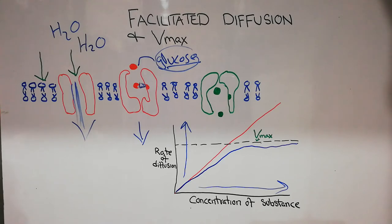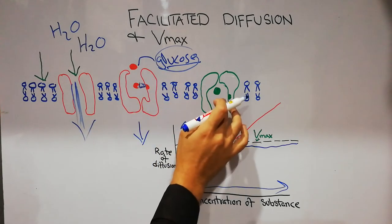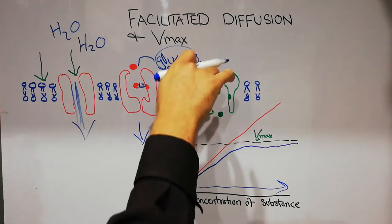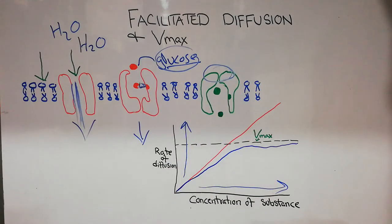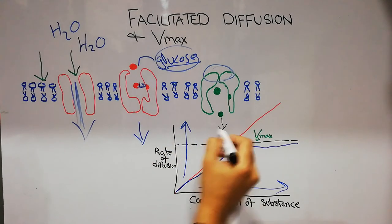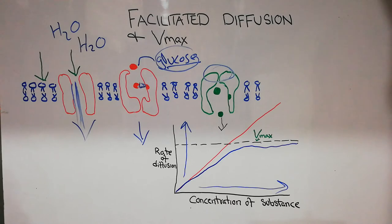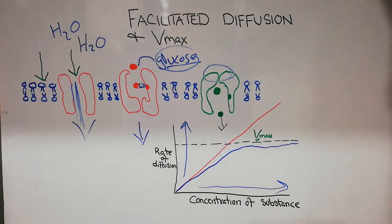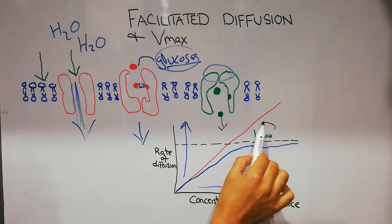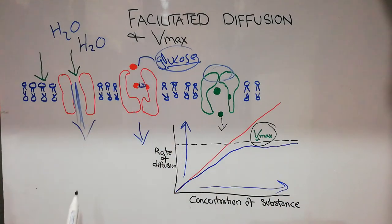The thermal energy of the glucose helps it detach from the binding site and move inside the cell. But during the time the glucose is detaching and going inside, the channel is closed from the outside. As long as the glucose has not fully moved inside, the channel will not change back to its original shape. This is why there is a certain time limit during which the rate cannot increase, and that limit is known as VMAX, or maximum velocity.